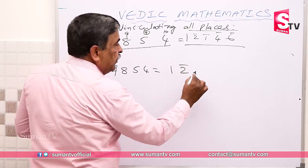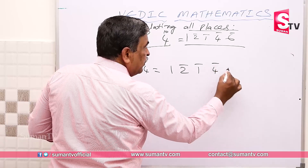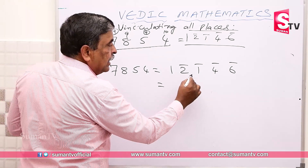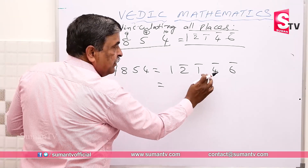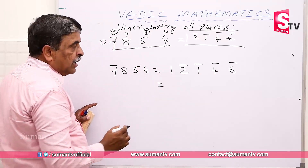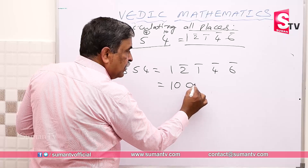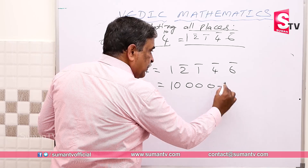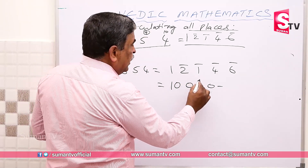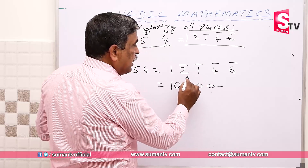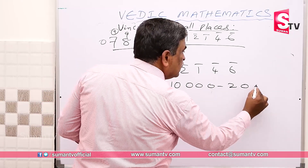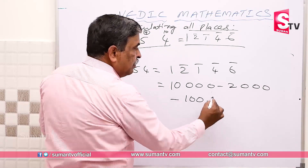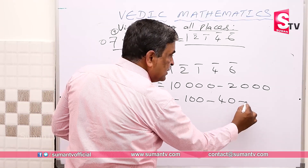Vinculum one, vinculum two, vinculum one, vinculum four, vinculum six. This is expanded — Chuddha. Then you can expand it: 1st place, 10th place, 100th place, 1000th place, 10,000 place. Then you can expand it — 10,000 minus 2,000, then minus 100, minus 40, minus 6.